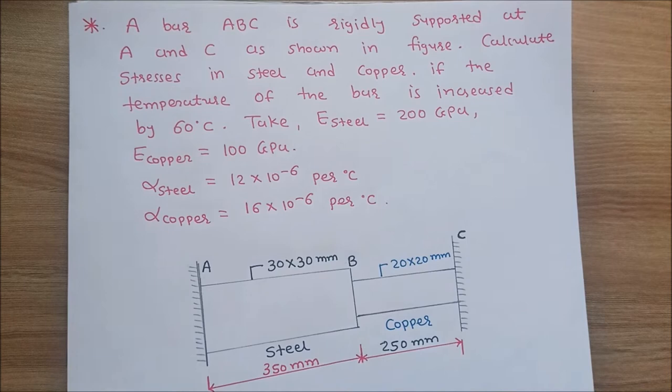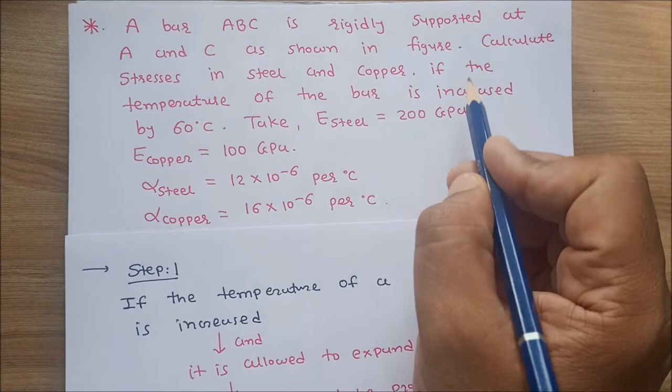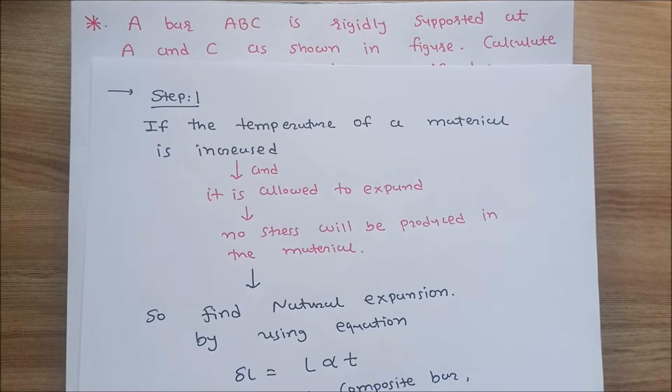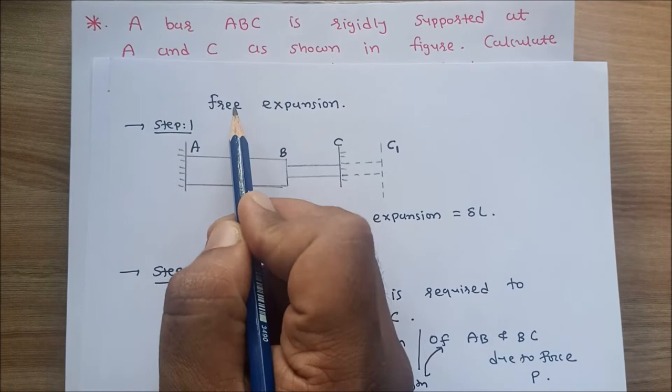In step number 1: if the temperature of a material is increased — in our case temperature is increased by 60 degrees — and it is allowed to expand freely, no stress will be produced in the material. So here in step number 1, we consider that this composite bar expands freely. This means we assume free expansion.